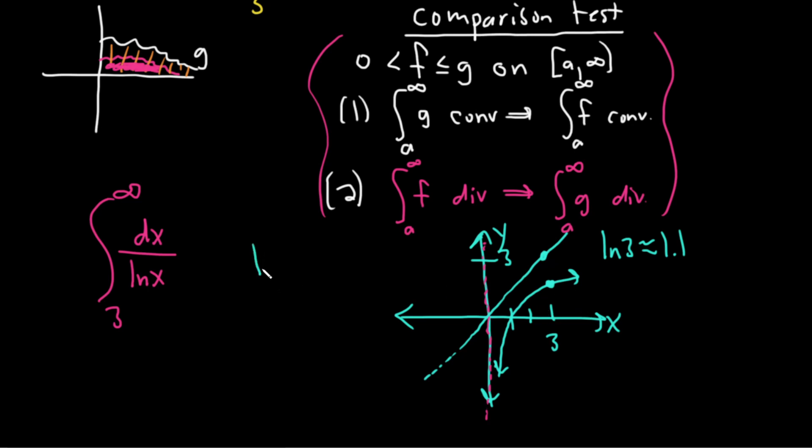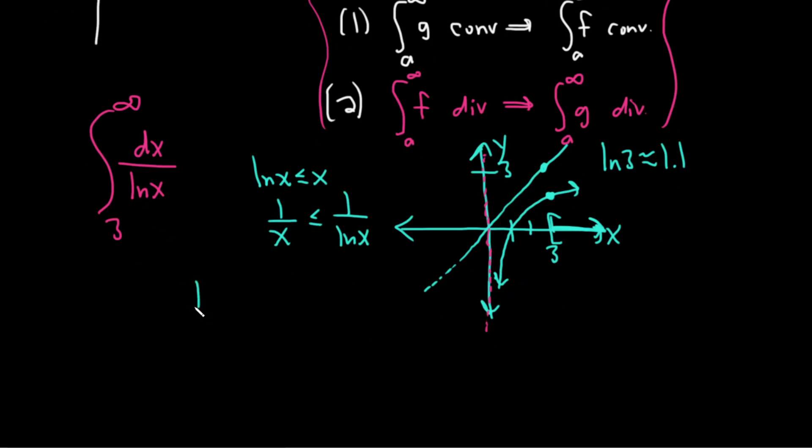So we could say that ln x is less than or equal to x for x bigger than 3. It's pretty clear from the graph. We're not asked to do a proof or anything like that. So we can just use our intuition and our minds and come up with things. And if we divide both sides by x and ln x, that's going to give us 1 over x less than or equal to 1 over ln x. Reading that backwards, that tells us that 1 over the natural log of x is greater than or equal to 1 over x.